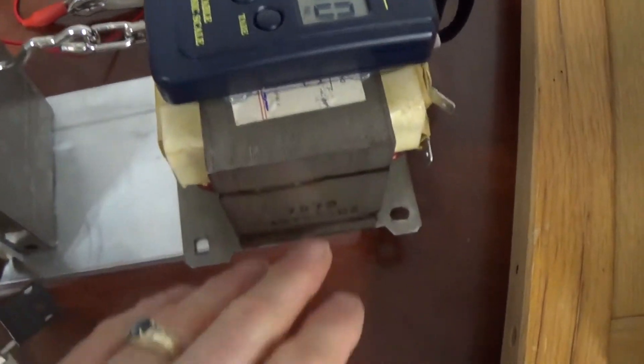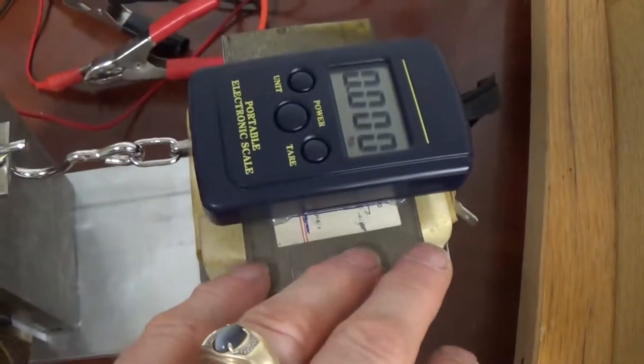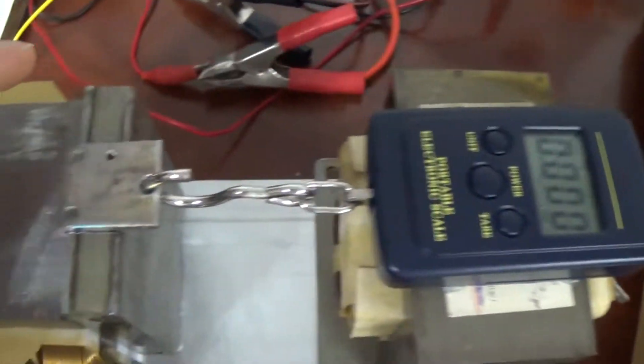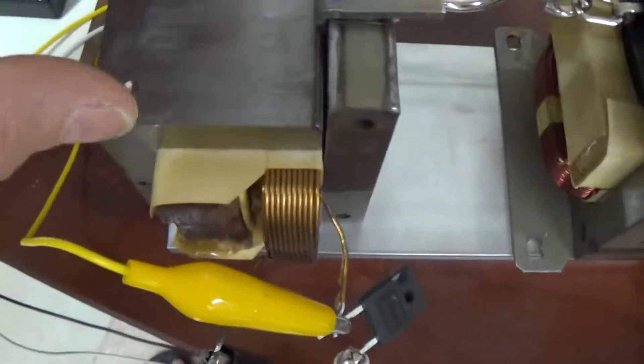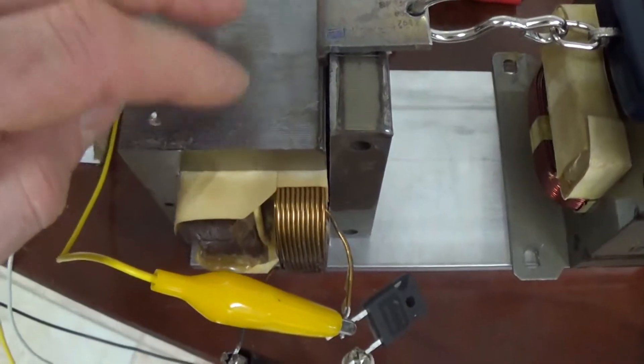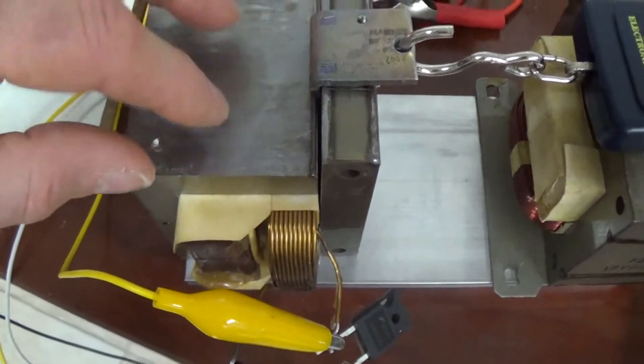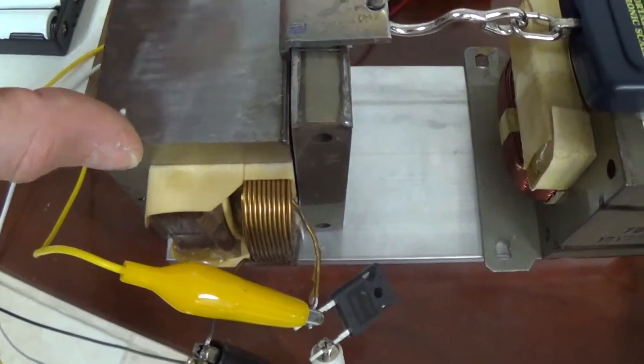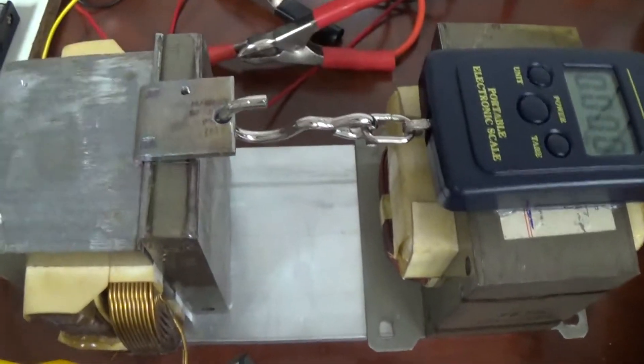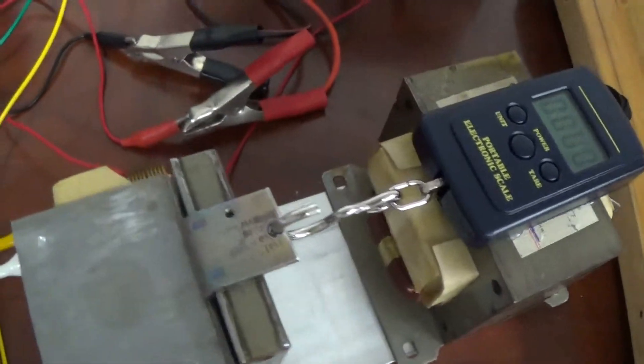This transformer here is not even being used - it's just hot glued down and the scale is hot glued there. This transformer here, the device under test, is the one that's going to be used and is also hot glued there. So everything is tight together and not moving.